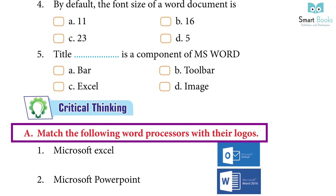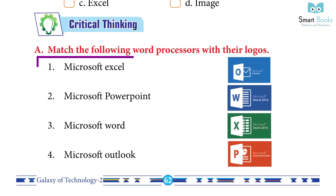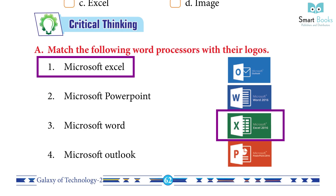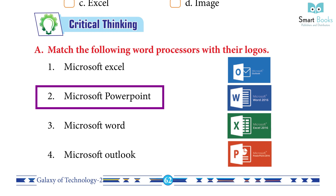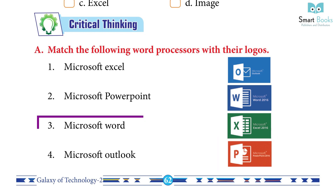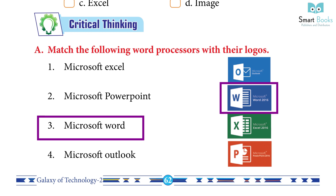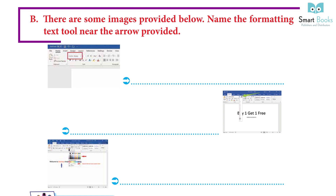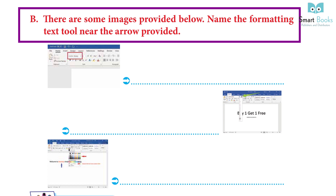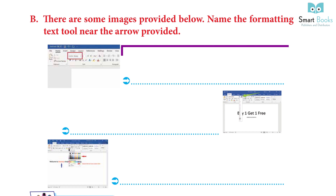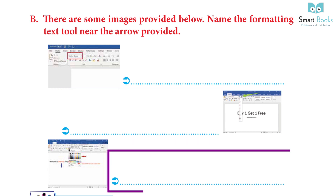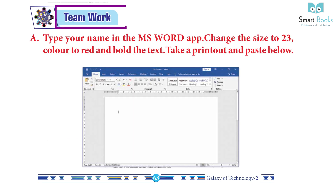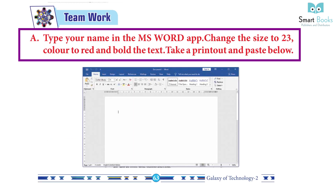Critical thinking — Exercise A: Match the following word processors with their logos: Microsoft Excel — C, Microsoft PowerPoint — D, Microsoft Word — B, Microsoft Outlook — A. Exercise B: Name the formatting text tools indicated by arrows in the images: 1. Font Style, 2. Font Size, 3. Font Color.